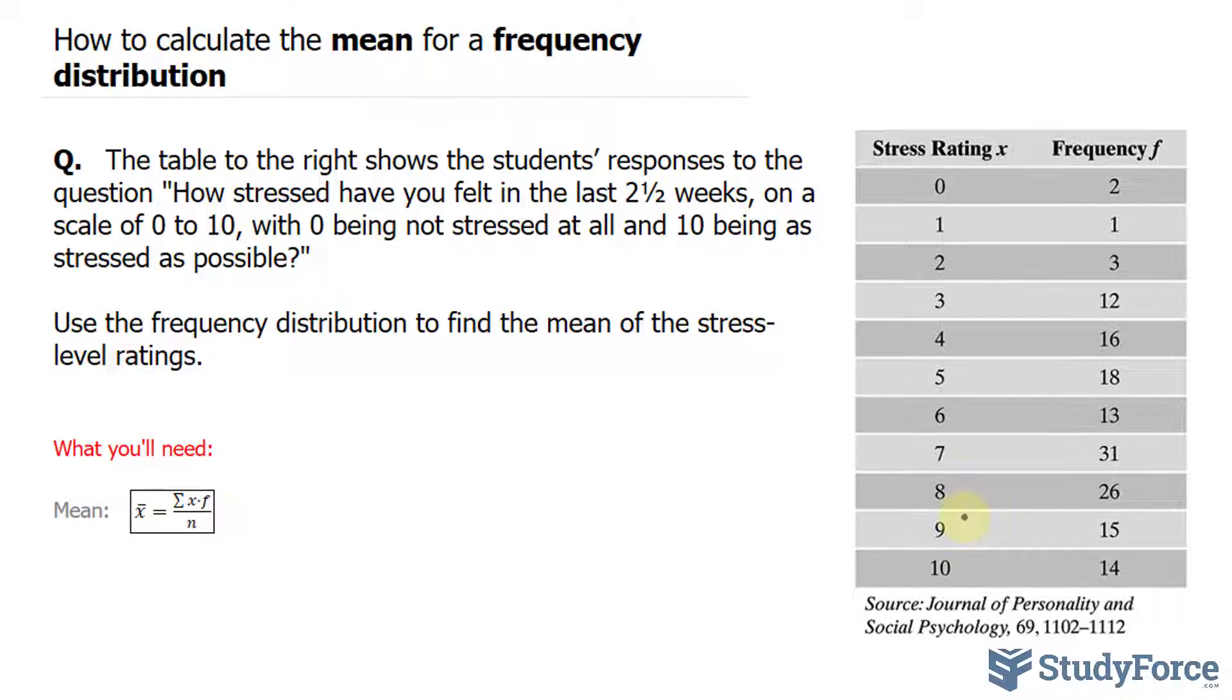When you're given a frequency distribution and looking for the mean, you'll use this formula: the mean equals the sum of each x value multiplied by its frequency, and you keep doing that for each row and add them up. Let's go ahead and do that.